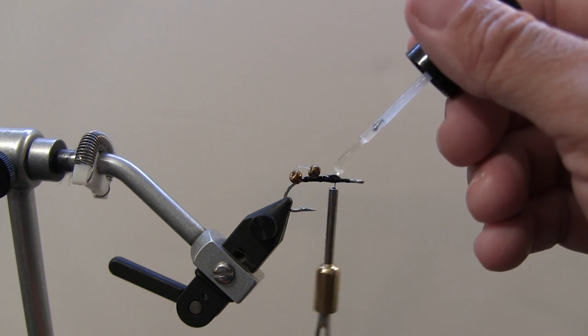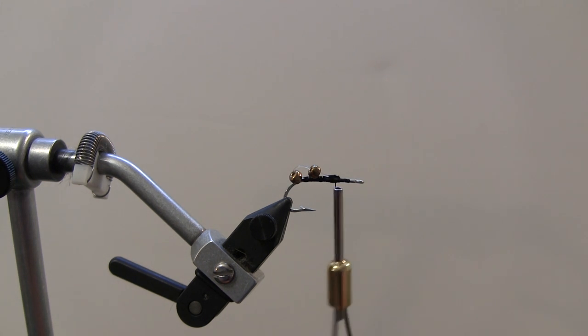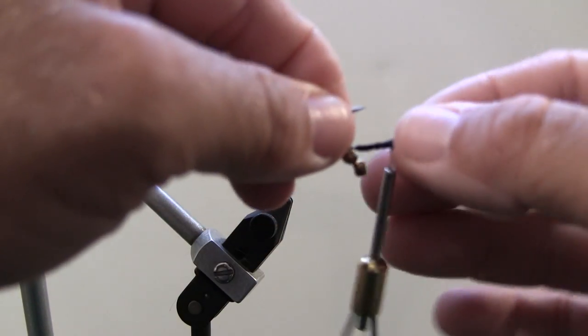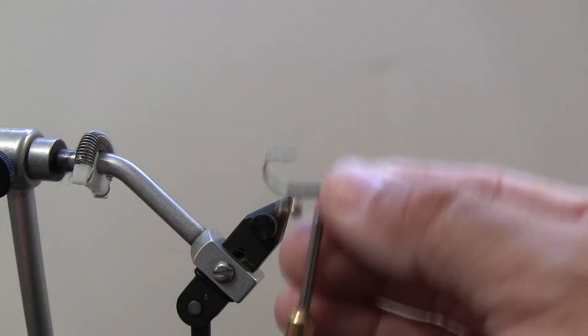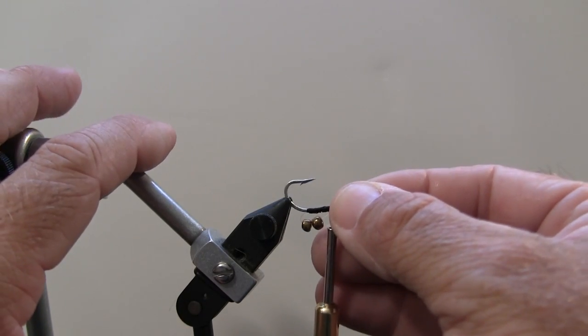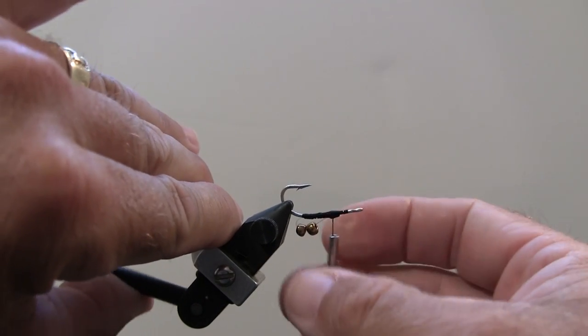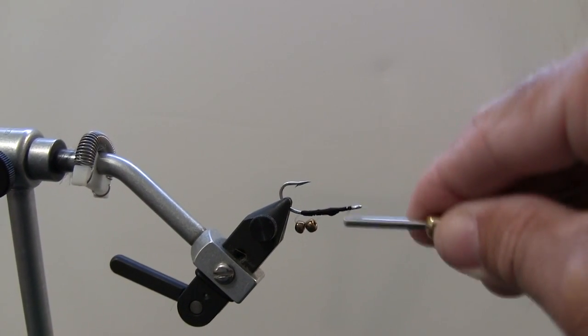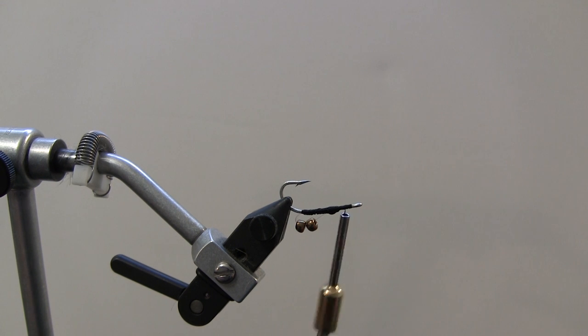The rest of this fly is going to be very similar to the bendback fly that I tie, except that I'm not going to be bending this hook. The good thing about these beads is not only do they make noise, they make sure that the fly rides hook point up, so it's really good for staying out of the grass. Where I fish there's a lot of grass on the bottom, and this makes it easy to come out of there and stay out of there.